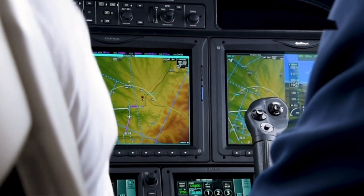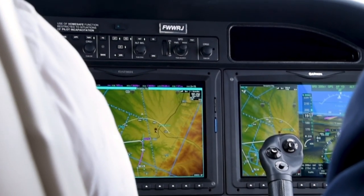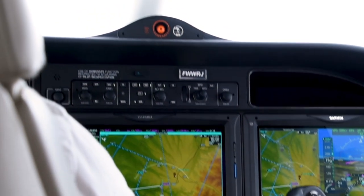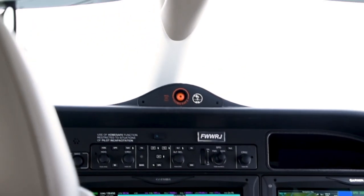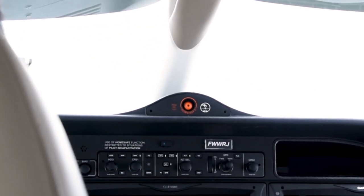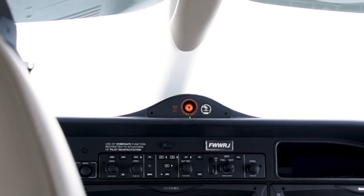The HomeSafe system can be activated by anyone on board the aircraft with the simple push of a button. The orange HomeSafe button is situated at the top of the cockpit instrument panel, visible from any location within the cabin.